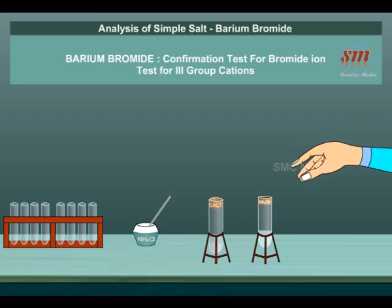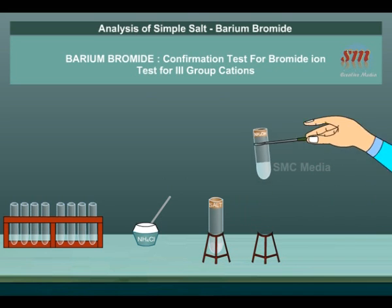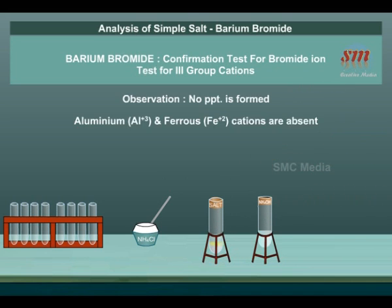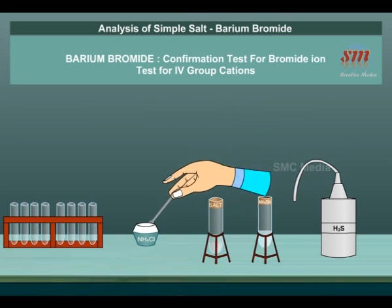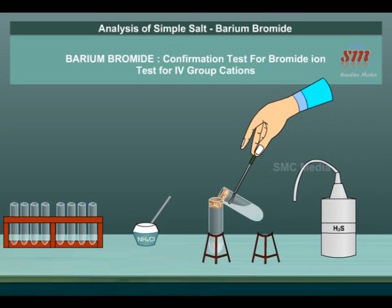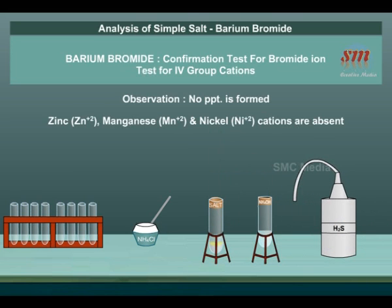Test for 3rd Group Cations: To the salt solution, NH₄Cl salt and NH₄OH solution are added. No precipitate is formed. Aluminium Al³⁺ and ferrous Fe²⁺ cations are absent. Test for 4th Group Cations: NH₄Cl, NH₄OH, and H₂S gas are passed. No precipitate is formed. Zinc Zn²⁺, Mn²⁺, and Nickel Ni²⁺ cations are absent.